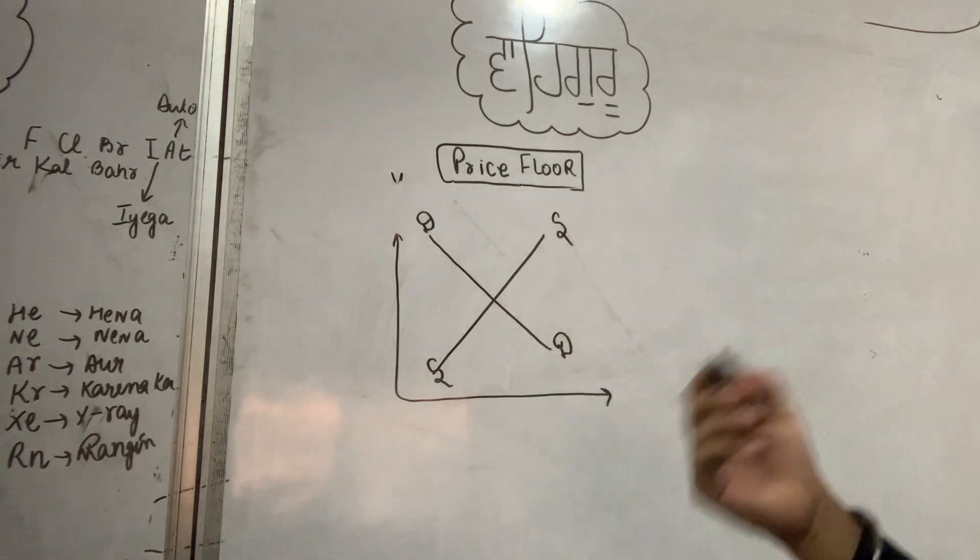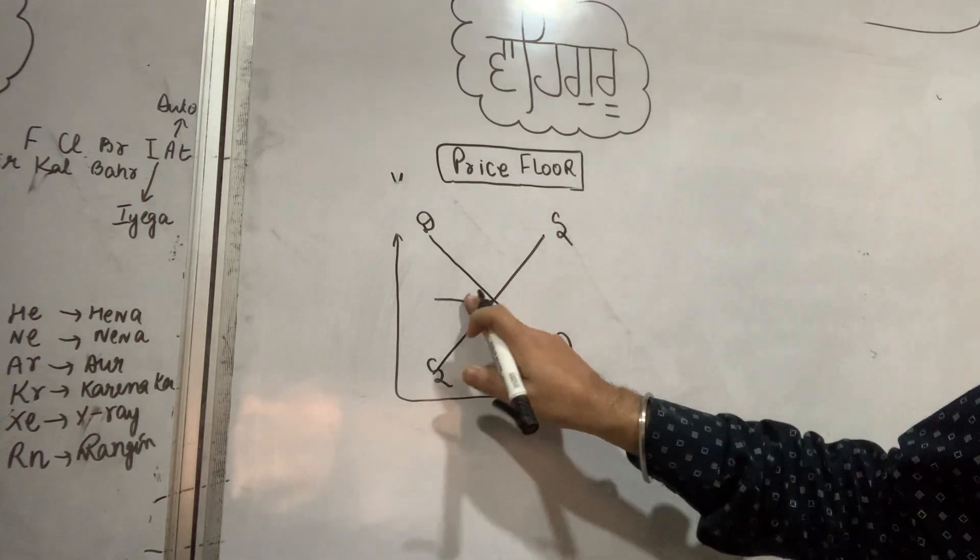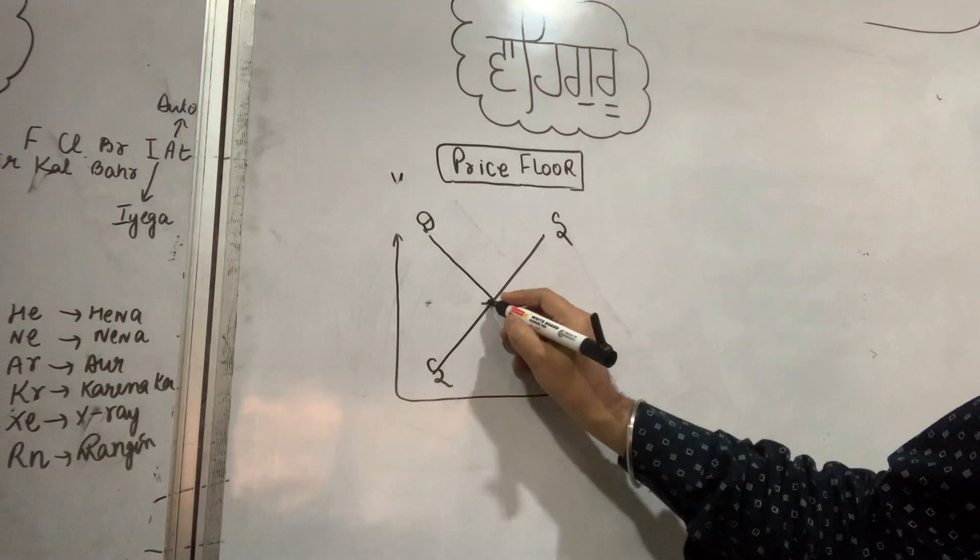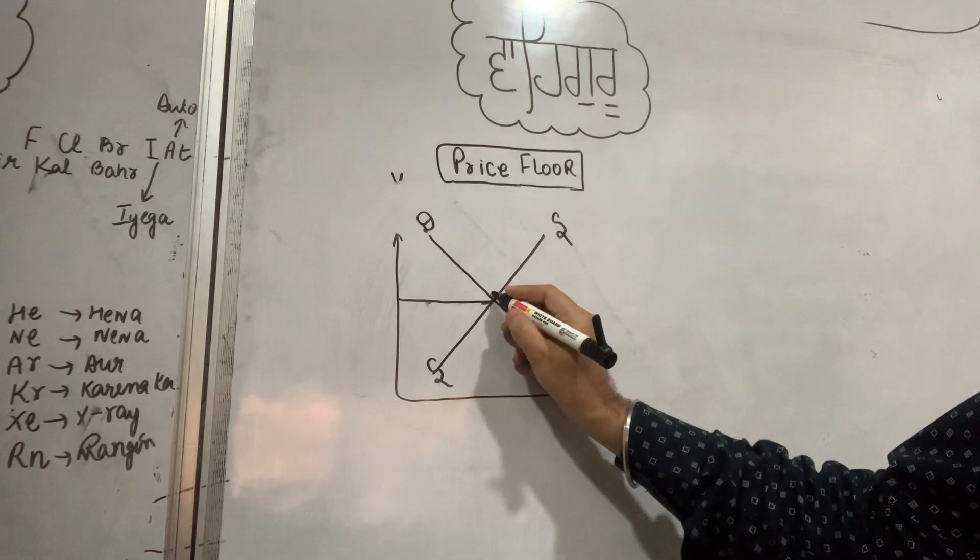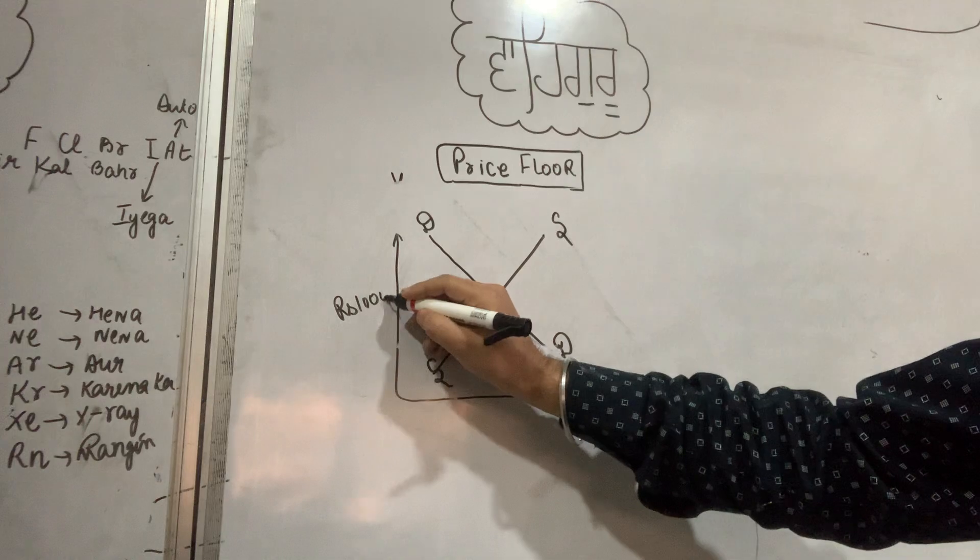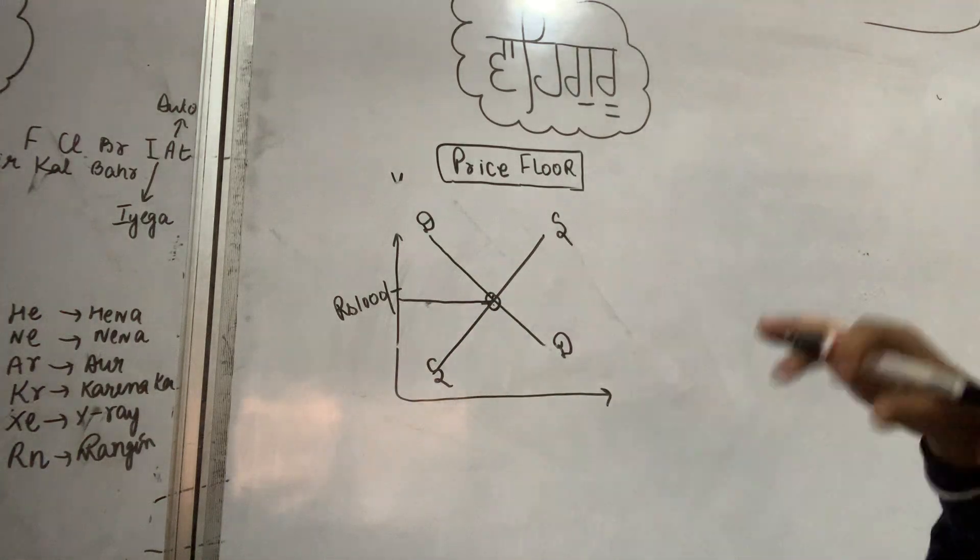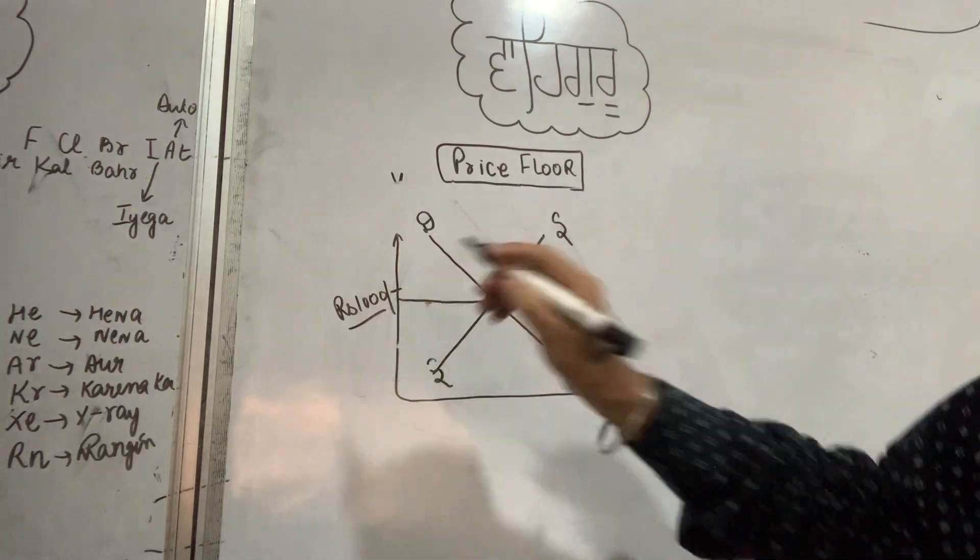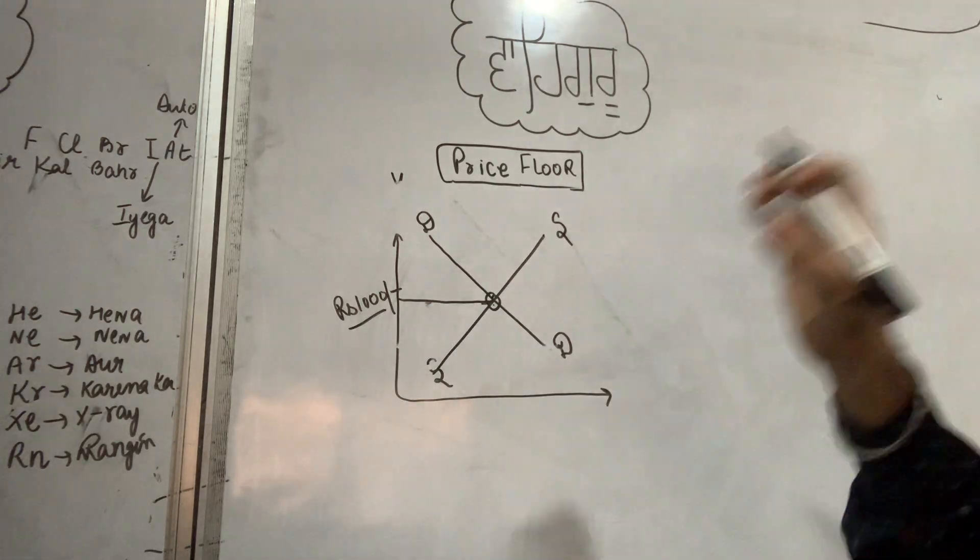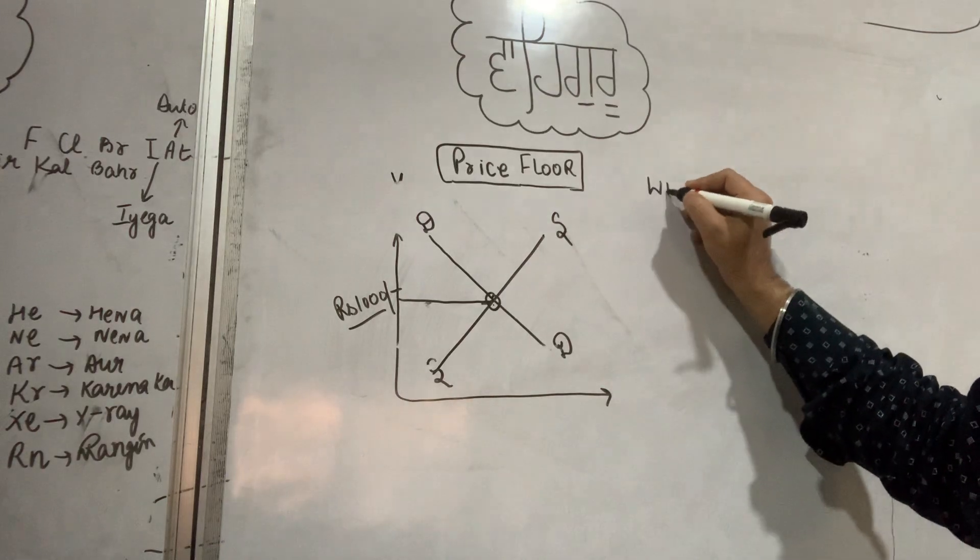Suppose this is wheat's price being determined. What price has the entire market and industry determined? Suppose the demand curve and supply curve meet here, and the price that emerges is 1000 rupees per bag. So price is decided at 1000 rupees per bag.